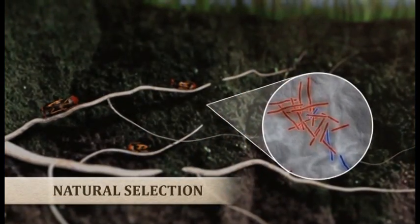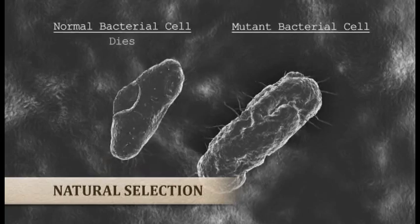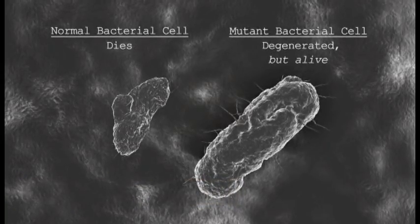Natural selection plus mutation actually works in the wrong direction for evolution. So the question is, how does evolution work?